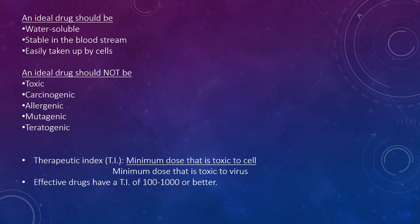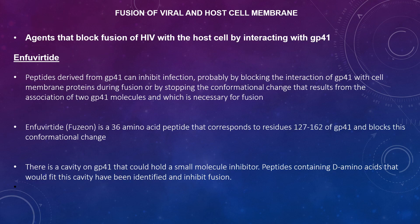Effective drugs have a therapeutic index of 100 to 100,000 or better. Looking at viral and host cell membrane agents that block fusion of HIV with the host cell by interacting with GP41: the first one is Enfuvirtide. These are peptides derived from GP41 which can inhibit infection, most likely by blocking the interaction of GP41 with cell membrane proteins during fusion by stopping the conformational change.